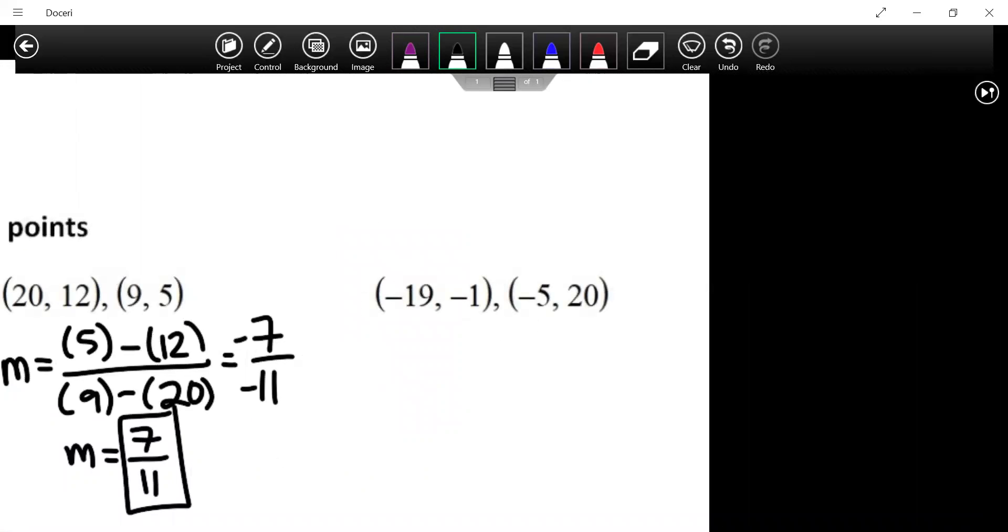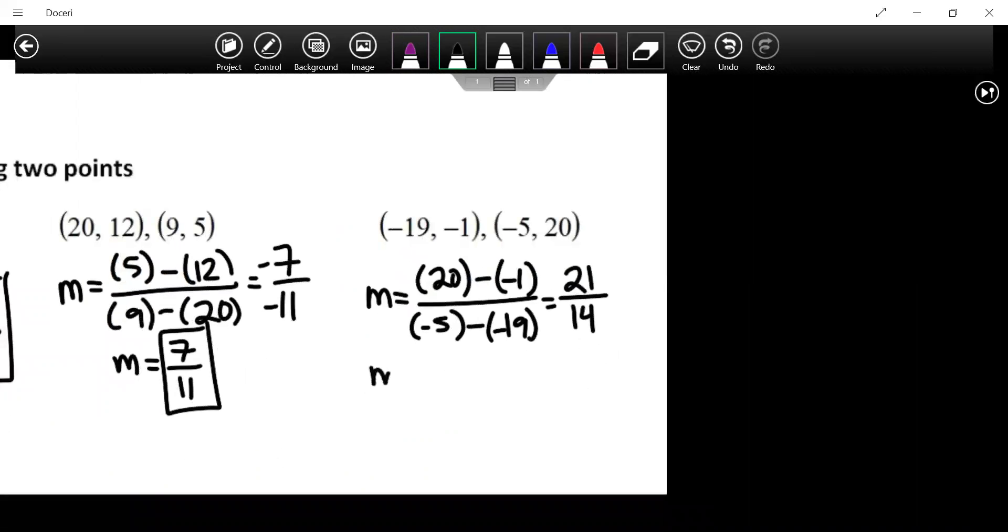Last one. Y2 minus y1. Negative 5 minus 19. 21 over 14. Can that be reduced? To which one? Seven. Good stuff.